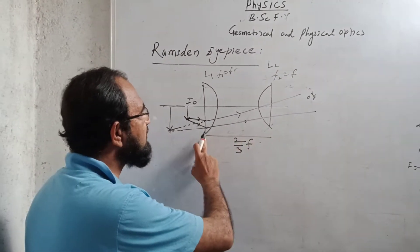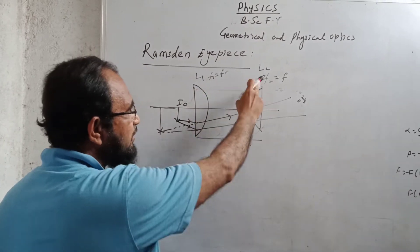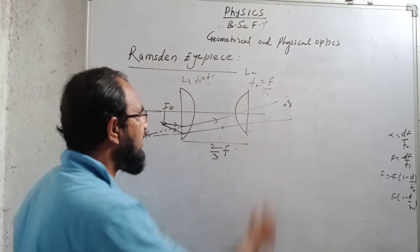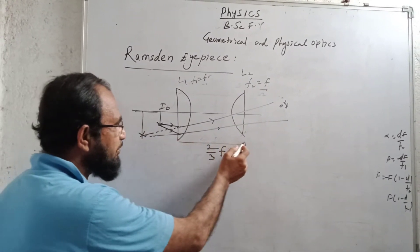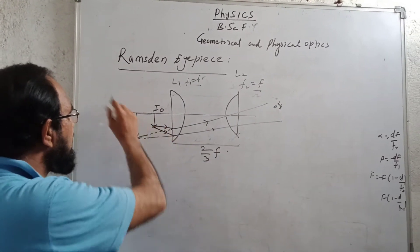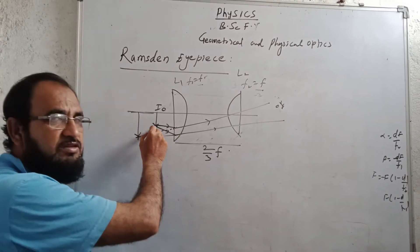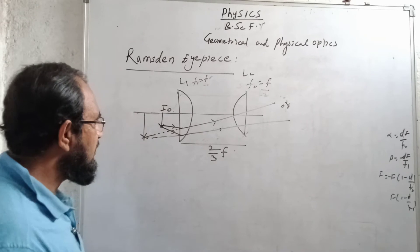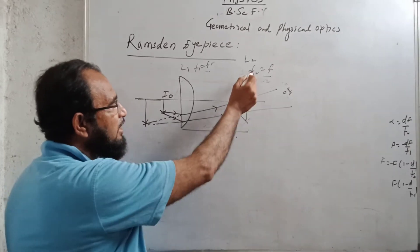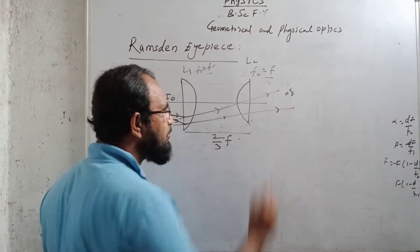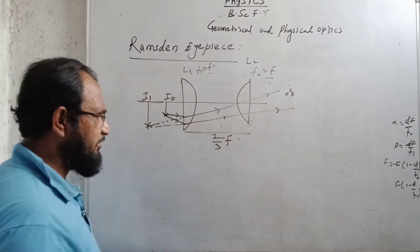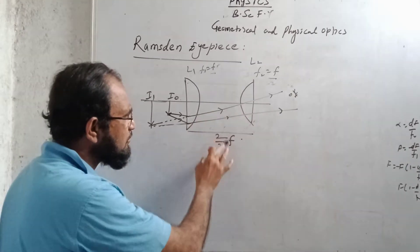I am using here two plano-convex lenses L1 and L2, such that their convex parts are facing each other. The focal length of both the lenses is F — meaning the same focal length. The distance of separation between the two lenses is 2/3 F. The light rays coming from the objective lens will form the first image here at I0. The light rays falling on lens L1 will be refracted towards L2, and L2 will also refract the light rays towards the observer. The observer will see that the image forms at I1. The distance between these two lenses is 2/3 F.